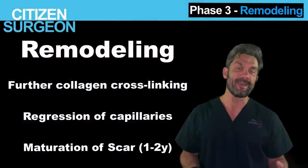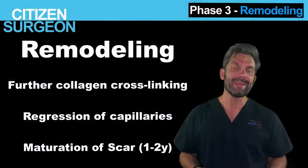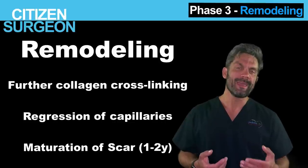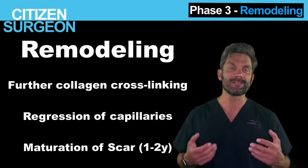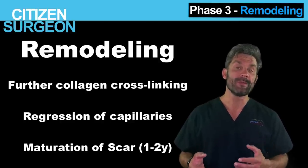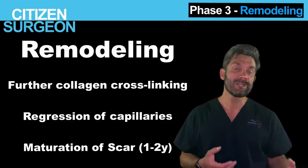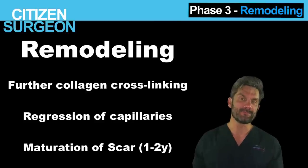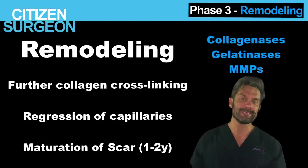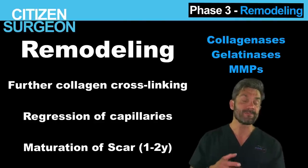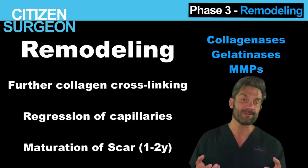After a couple of weeks in the proliferative phase laying down collagen, we enter the remodeling phase. The remodeling phase kicks in between 2 and 3 weeks. This is where you get further collagen cross-linking, regression of the capillaries — that's when the wound becomes less pink — and maturation of the scar, which can take up to a couple of years. There are many enzymes involved, including collagenases, gelatinases, and matrix metalloproteinases (MMPs), responsible for collagen cross-linking, transitioning from type 3 to type 1 collagen, and regressing capillaries.